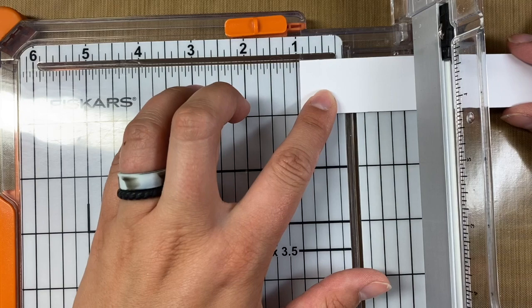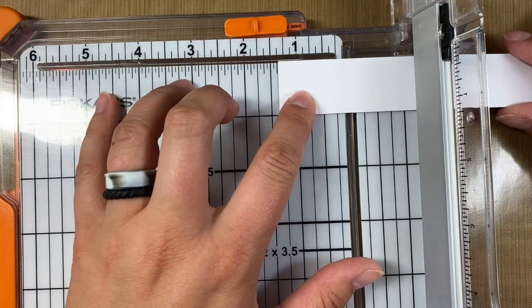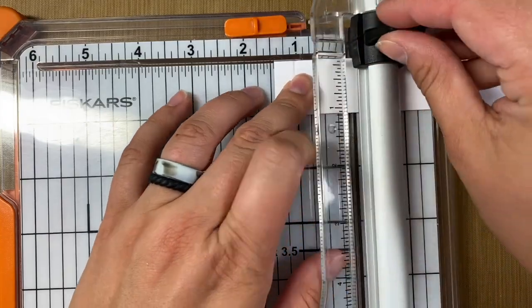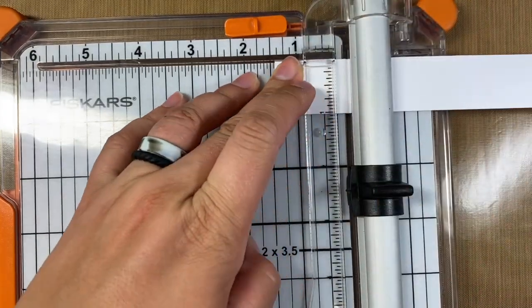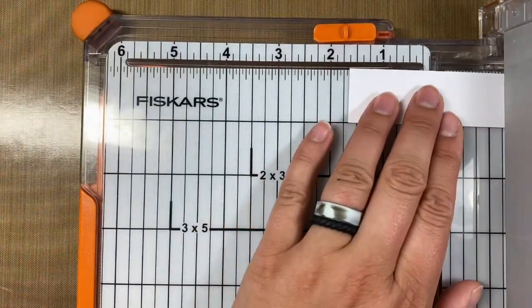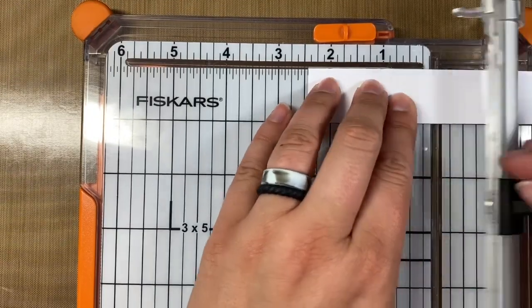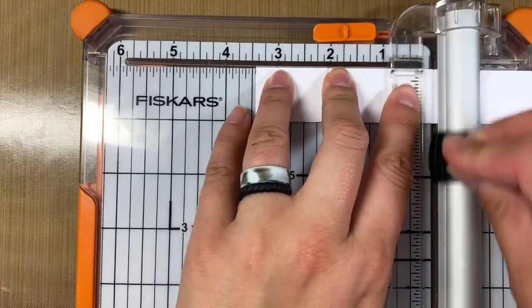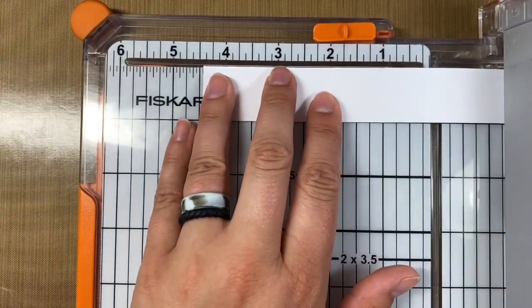Now instead of going to the one inch and moving it a sixteenth down I'm actually going to go to the one and a half inch, move it a sixteenth down and I'm going to do that the entire time. So I'm going to be moving it over an inch at a time and the reason I'm doing this is because you'll see on the way back we're actually going to flip it over and score the reverse way.